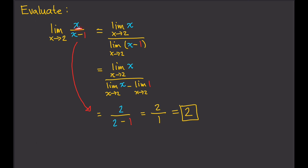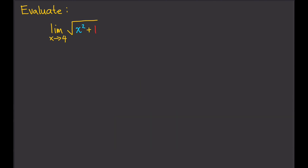What happened is we just replaced x with 2 — the 1 is just copied — and that's it. If this detailed breakdown is not required, then you don't have to use it. But if the problem asks you to include it in your solution, then you have to. Evaluate the limit of the square root of x squared plus 1 as x approaches 4. This one has a square root, so we can use the radical root theorem for limits. We can write this as the square root of the limit of x squared plus 1 as x approaches 4.